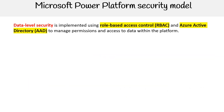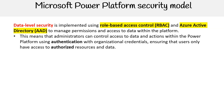Data level security is implemented using role-based access control and Azure Active Directory to manage permissions and access to data within the platform. This means administrators can control access to data and actions using authentication with organizational credentials, ensuring that users only have access to authorized resources and data.